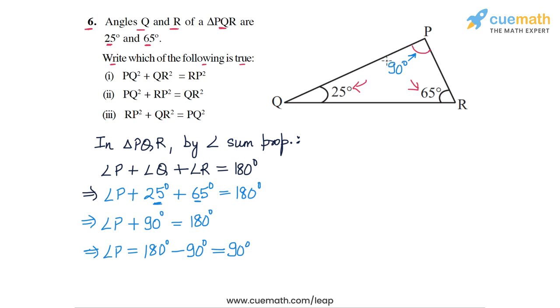So triangle PQR is a right angled triangle in which QR is the hypotenuse. So let's write this conclusion, triangle PQR is right angled at the vertex P. And this means that we can now apply the Pythagoras theorem to triangle PQR. So by the Pythagoras theorem applied to triangle PQR, the hypotenuse square or QR square must be equal to the sum of the squares of the other two sides. So QR square must be equal to PQ square plus PR square.